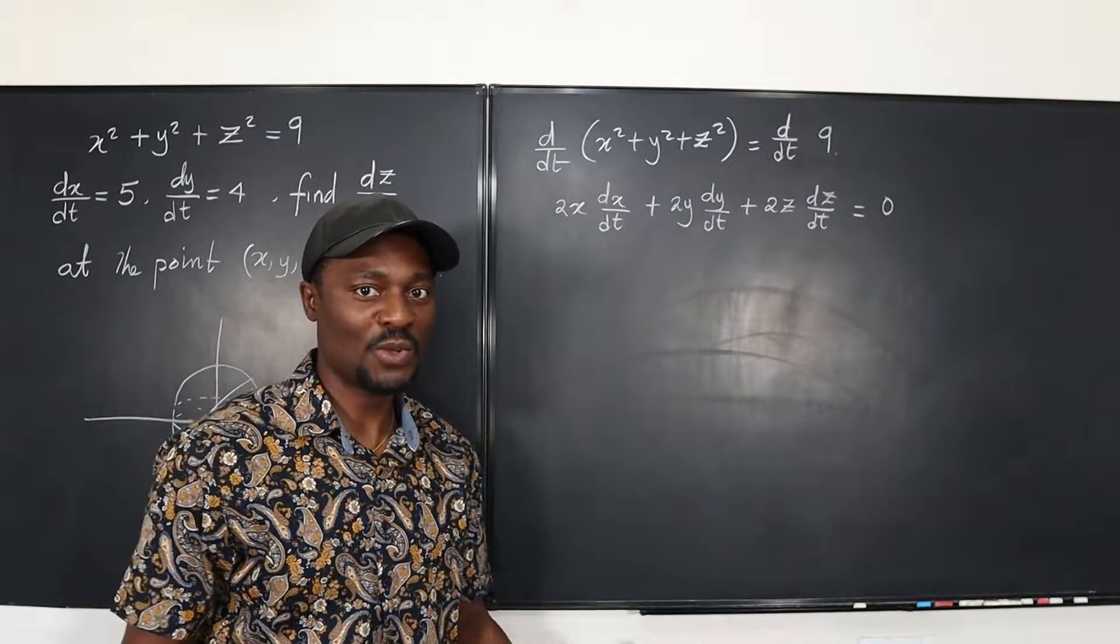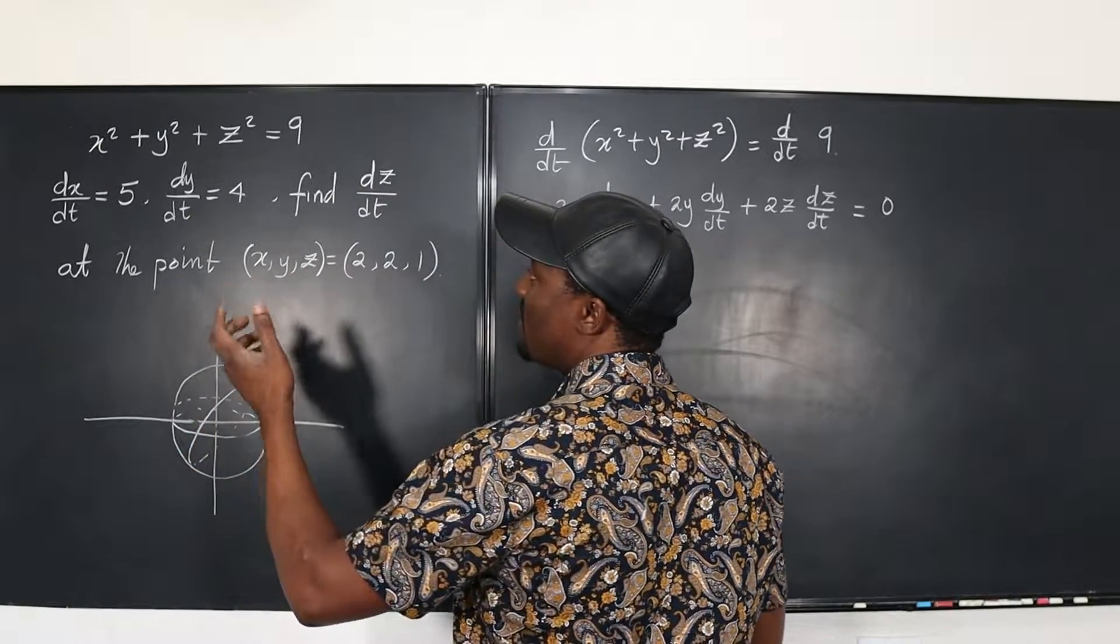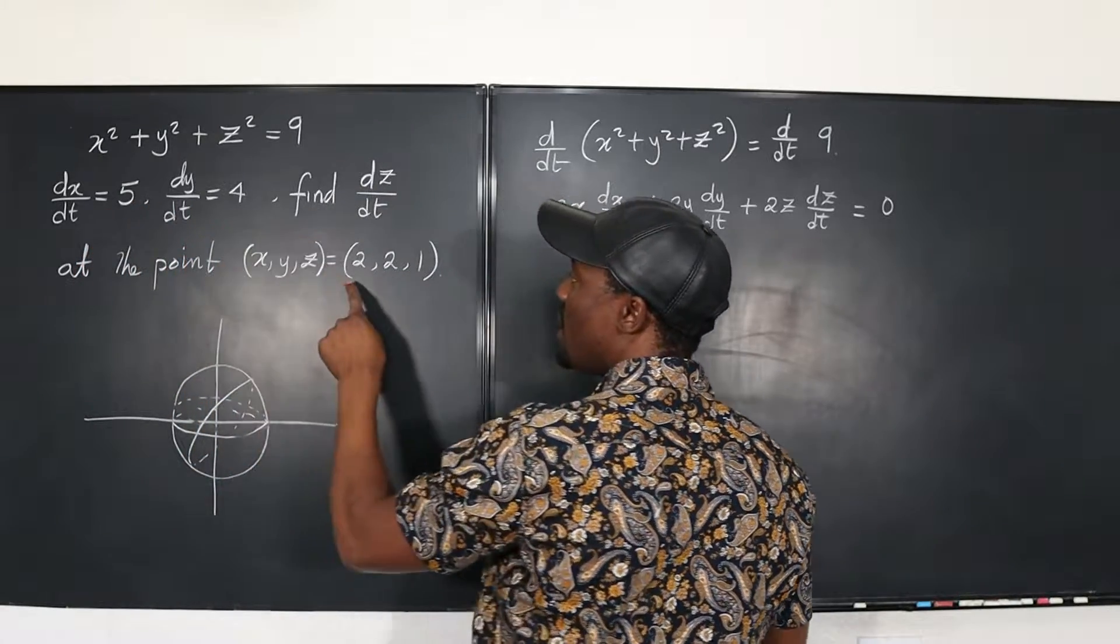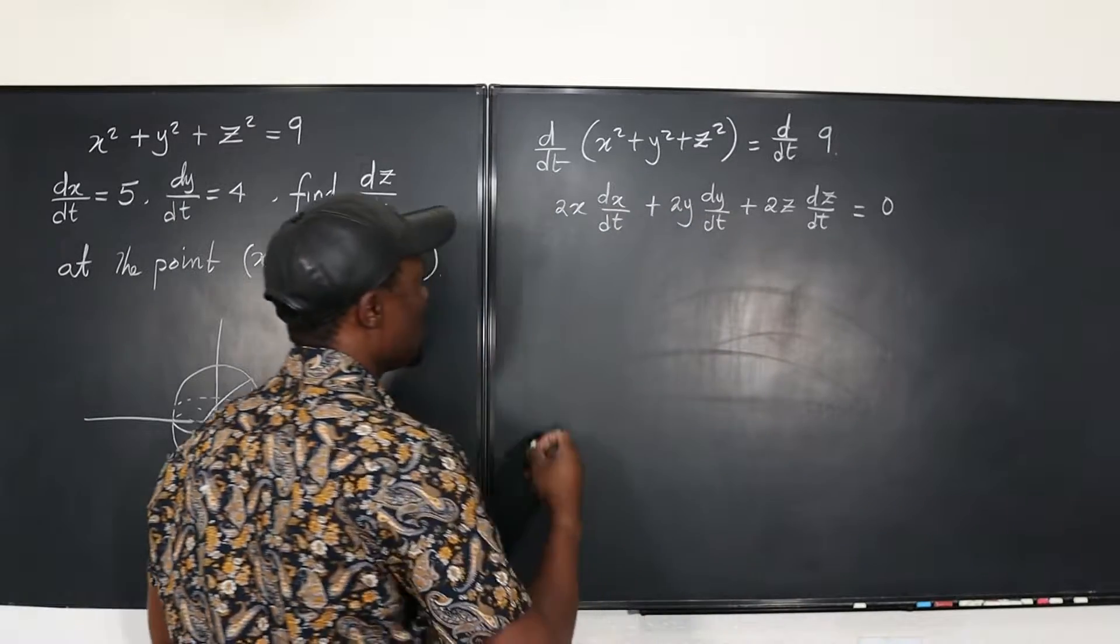You just want to plug in all the values and you're good. So let's go here and find all our values. dx/dt is 5, dy/dt is 4. We know x is 2, y is 2, and z is 1. So let's plug in all the numbers.